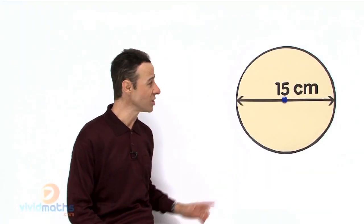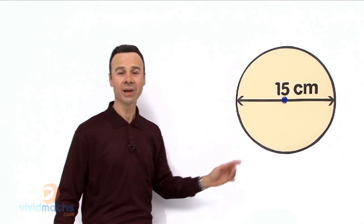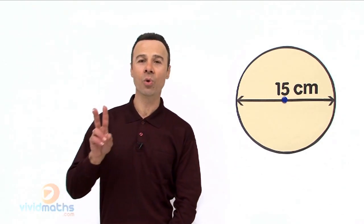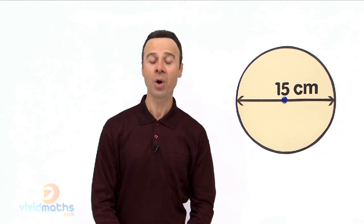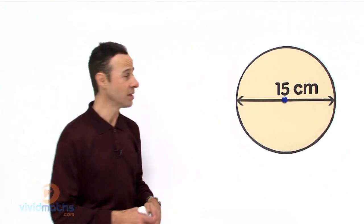We are asked to find the complete distance all around this circle, and there is more than one formula for working out that circumference. I am going to write down both of them. The first one is